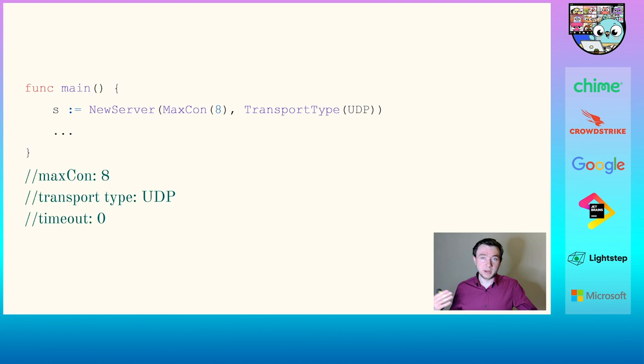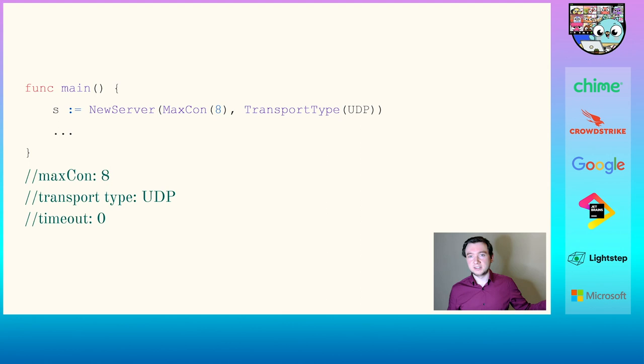In our main method, creating a server allows us to pass maximum connections and transport type, for example. Because we accept any amount of server options, we don't have to pass every single variable — in this case we decided not to pass the timeout. Due to Go's default zero values, the timeout is zero, maximum connections and transport type are set to UDP. We could also think of creating default options in a similar way — rather than having the options inside the constructor defined as an empty struct, we can say the timeout is one thousand and maximum connections is already set to four, for example.